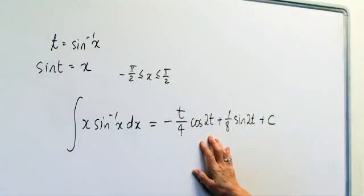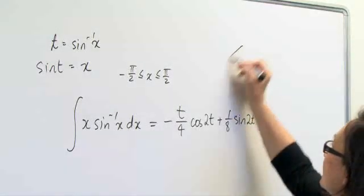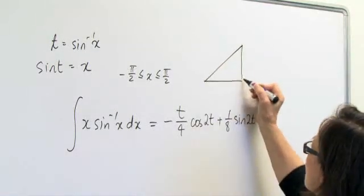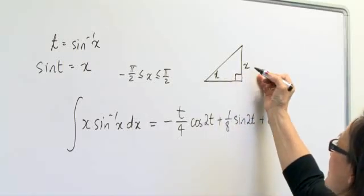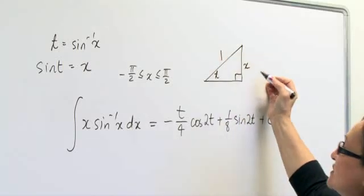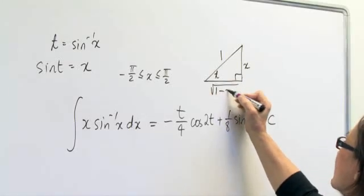We need to change our t's back to x's. So we have, from our substitution, that sine t equals x, so the opposite over the hypotenuse. Then the adjacent side becomes the square root of 1 minus x squared.